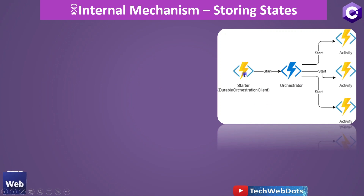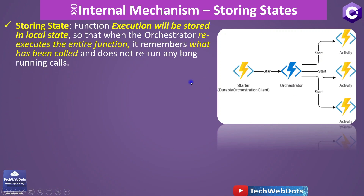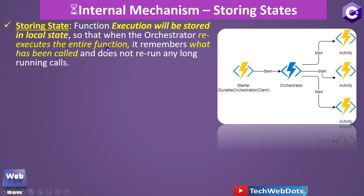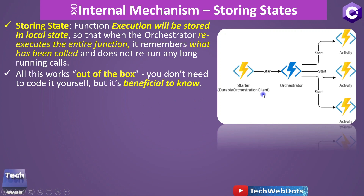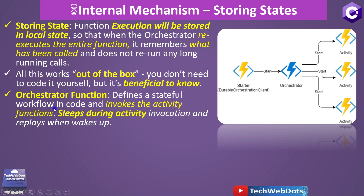Now let's focus on the internal mechanism. As you can see in this image, normally there will be one durable client which calls the orchestrator, and the orchestrator calls further activities. Each activity has its own retry mechanism. When a function execution is stored in local state, the orchestrator re-executes the entire function to check the state of activities — it remembers what has been called and does not have to run any long-running calls again. If one activity is already executed and completed its task, we don't want to re-execute it. All of this works out of the box.